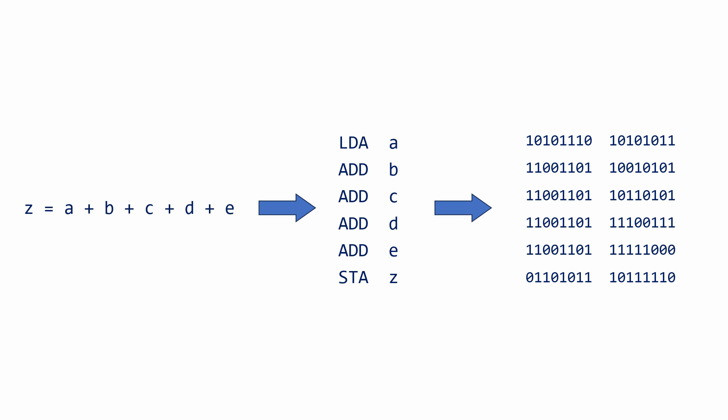A translator will usually convert high-level code into an intermediate form of low-level code first, before then converting the low-level code into machine code. Each high-level instruction becomes many low-level instructions, but then each low-level instruction becomes only one machine code instruction. Every type of CPU has its own set of commands that it recognizes — for example, LDA, STA, and ADD. These are known as the instruction set of the CPU.